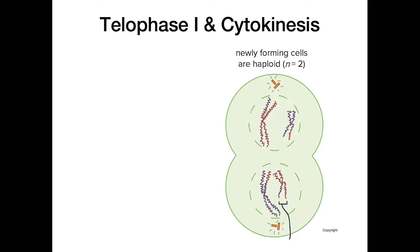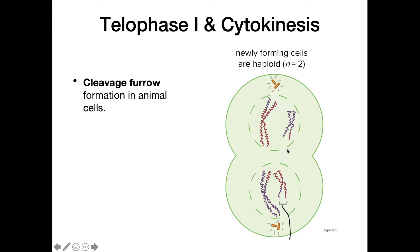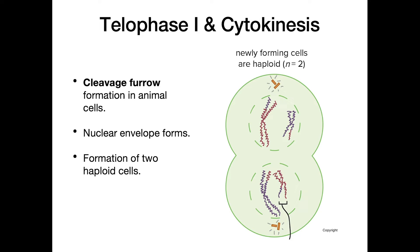Moving on to telophase 1 and cytokinesis: in animal cells we get the formation of a cleavage furrow, where the cells begin to be pinched in two. In this cleavage furrow there's a contractile ring of actin and myosin filaments that contracts and splits the cell in two. Also during this phase, new nuclear envelopes form around the two separate nuclei, resulting in the formation of two haploid cells.